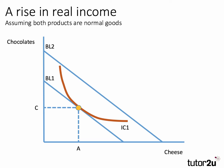Then we assume that income goes up. We're holding the prices of chocolates and cheese constant, so there's no change in the gradient of the budget line. It shifts out in a parallel fashion from BL1 to BL2, and this allows the consumer to move onto a higher indifference curve.